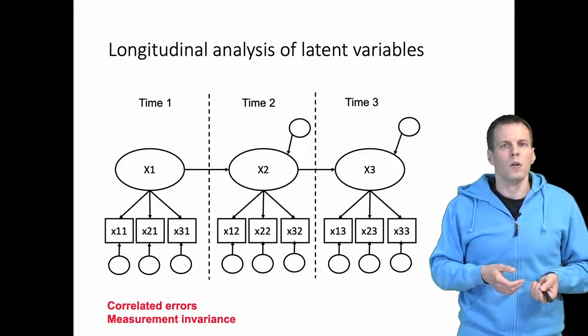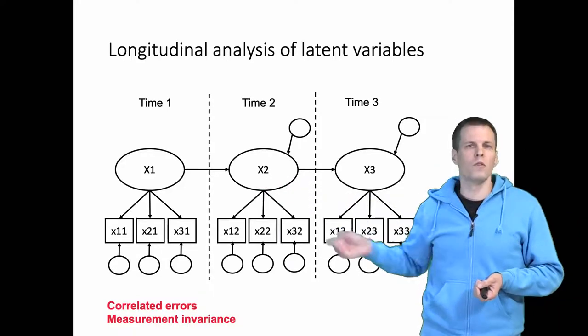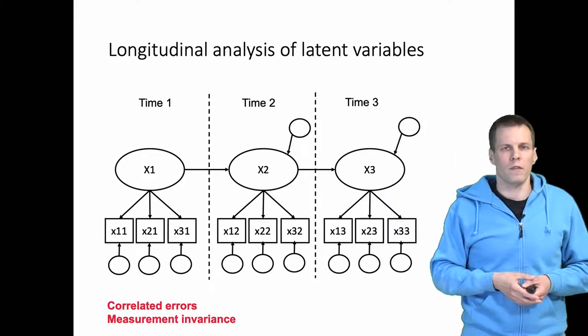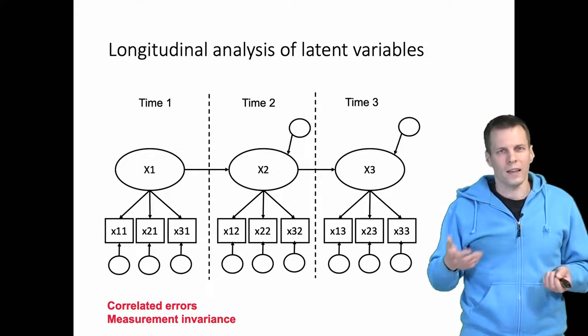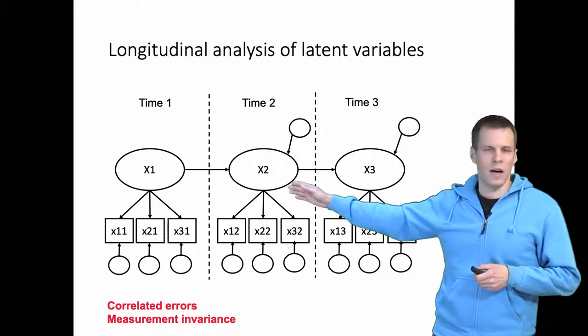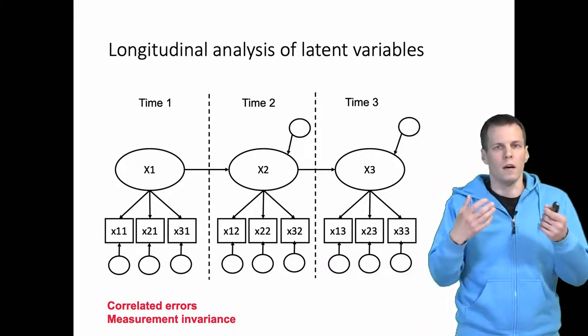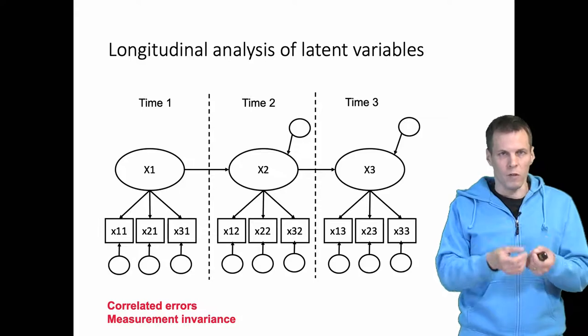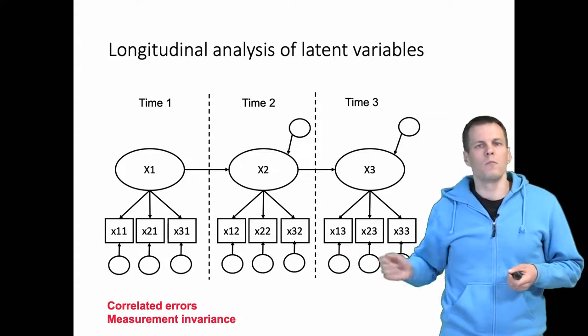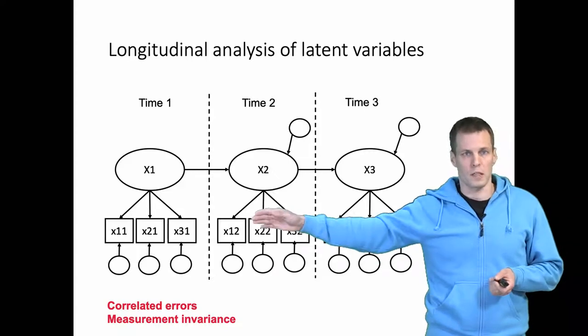Rather, this is a measurement effect. Or if we are looking at levels, one could say that x2 has a higher mean than x1, not because the attribute of interest has evolved over time, but simply because our measurement process works differently between the first and second time point.